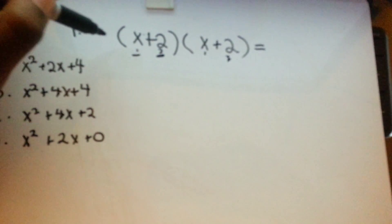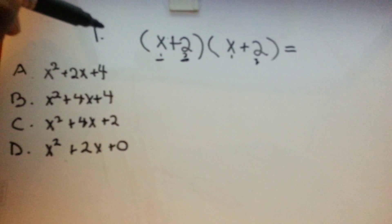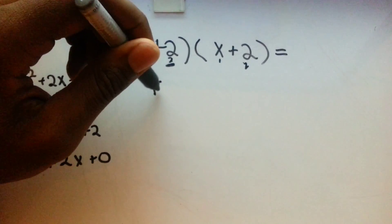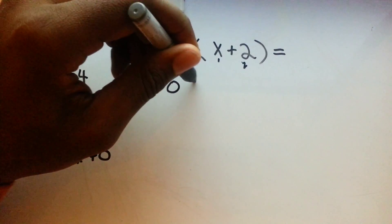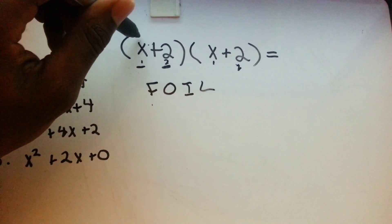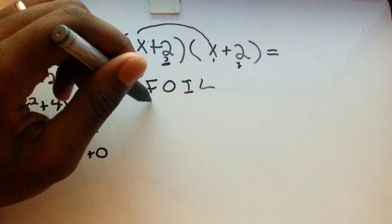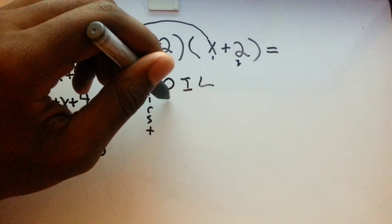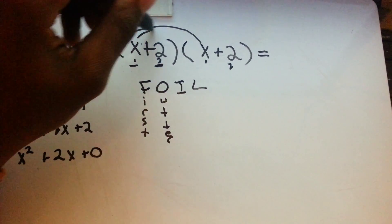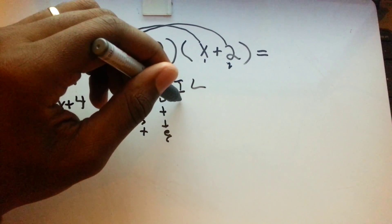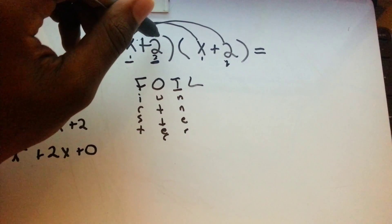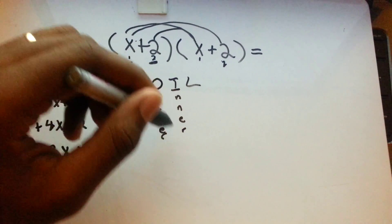And you have to multiply them by each other. And to do that, you use an operation called FOIL. The acronym FOIL, F-O-I-L, which stands for First, Outer, Inner, and Last.